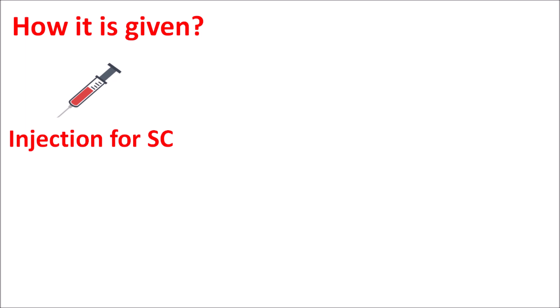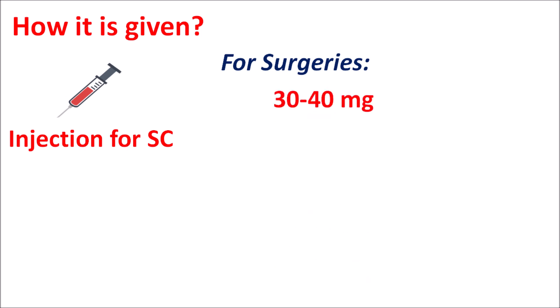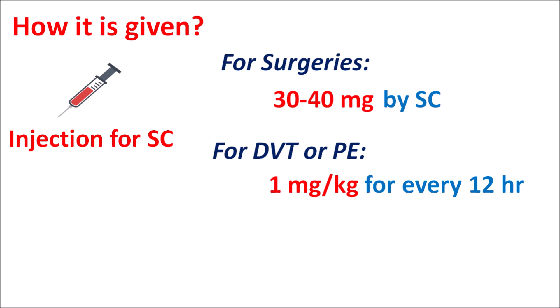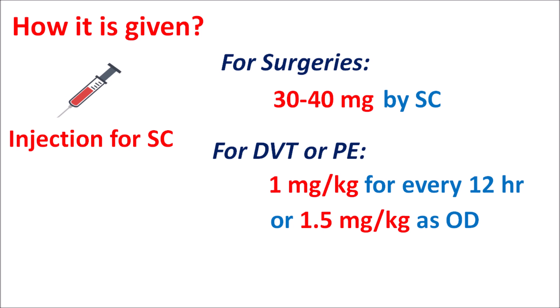Enoxaparin is available as an injection given by subcutaneous route. The dose depends on the clinical indication. For surgical prophylaxis, it is given at 30 to 40 mg once daily subcutaneously. For the treatment of DVT and pulmonary embolism, the dose is 1 mg/kg of body weight every 12 hours, or alternatively 1.5 mg/kg of body weight once daily.